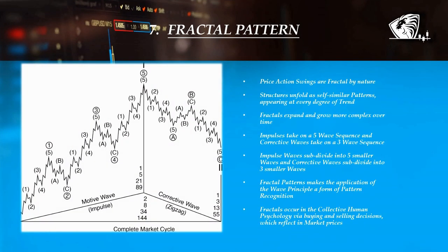Price action swings are fractal by nature, and using Elliott Wave relies heavily on charting and technical analysis. The structures unfold as self-similar patterns appearing at every degree of trend. Naturally growing fractals expand and grow more complex over time. Impulse waves take on a five-swings sequence and corrective waves take on a three-swings sequence, with impulsive waves subdividing into five smaller waves and corrective waves subdividing into three smaller waves. The application of the wave principle is a form of pattern recognition, and these natural patterns occur in the collective human psychology via buying and selling decisions, which reflect in market prices.